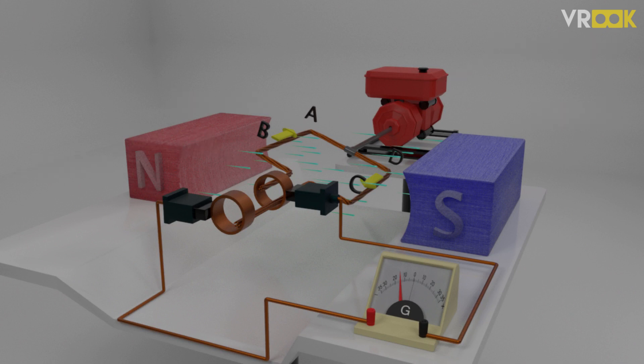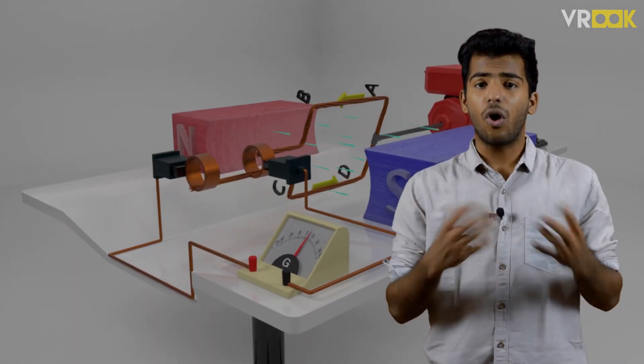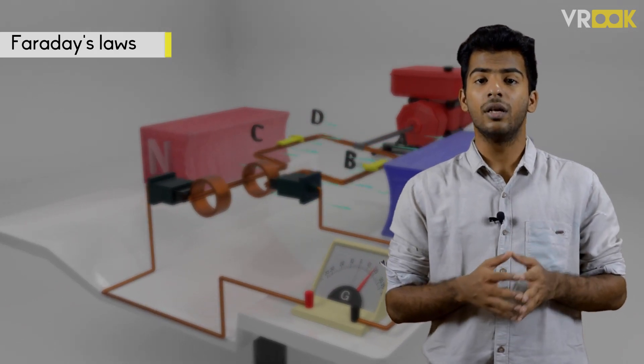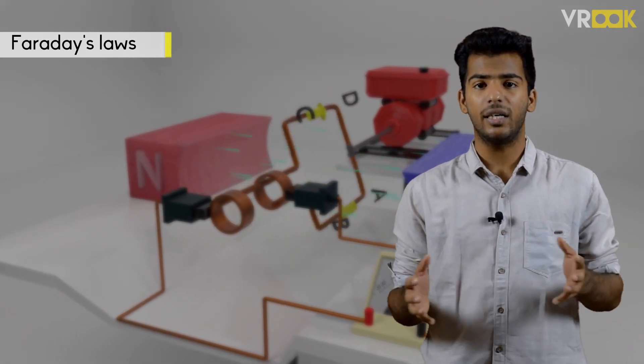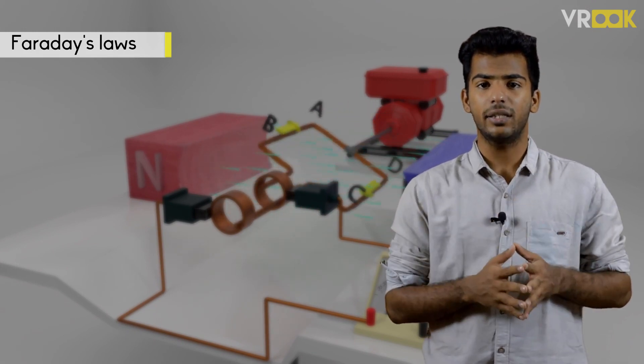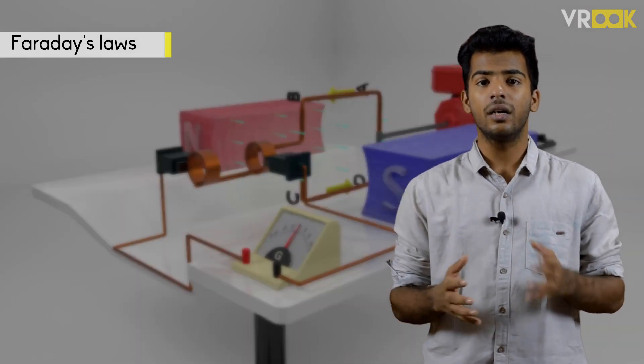Magnetic field will be set up between the magnetic poles. Now, according to Faraday's law, if there is a relative motion between the magnetic field and the conductor, an EMF will be generated in the conductor and hence we get the AC current.